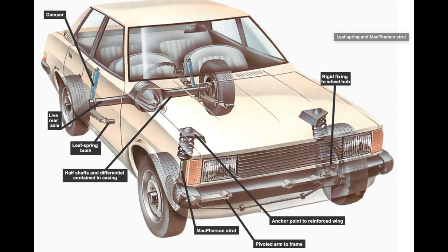Hence, the main objective of a good suspension system is to separate the structure, as much as possible, from shock loading and vibrations due to the irregularities of the road surface. This is achieved by flexible elements like springs and dampers. Another function of the suspension system is to achieve the main function without compromising the stability, steering, or general handling qualities of the vehicle. This is done by controlling the use of mechanical linkages.